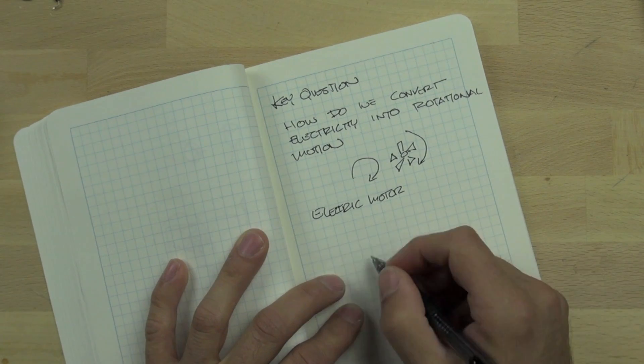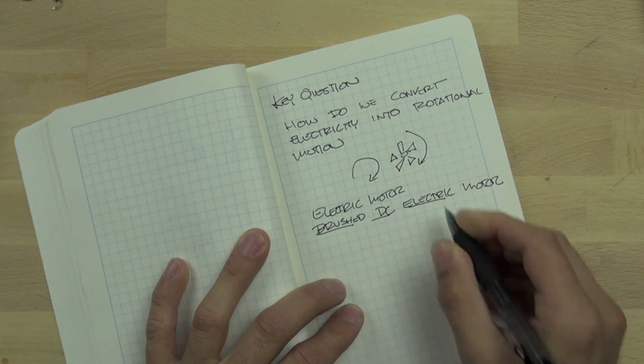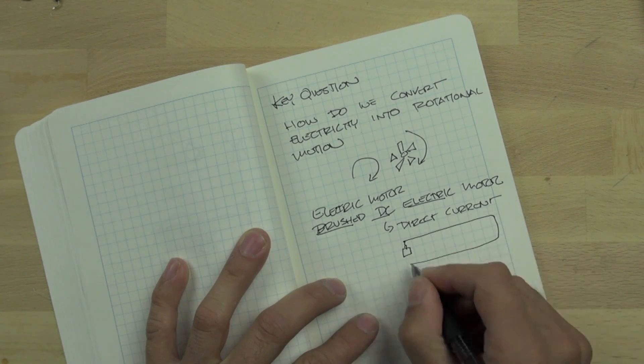Specifically, we're going to use a brushed DC electric motor. That's a particular type of motor. And it uses direct current.